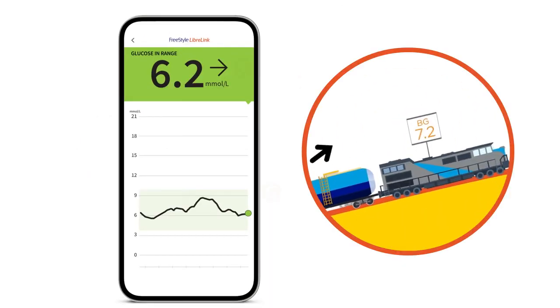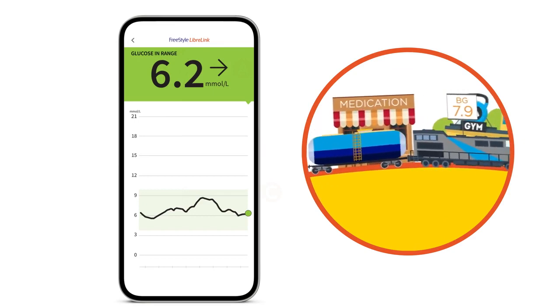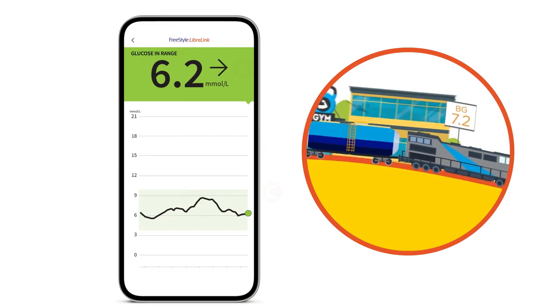Think of what we learned from the train. Trend arrows help you understand how quickly your glucose levels are changing, allowing you to act instead of react.